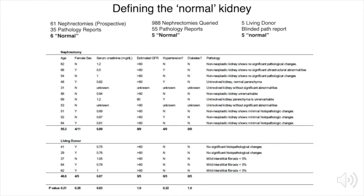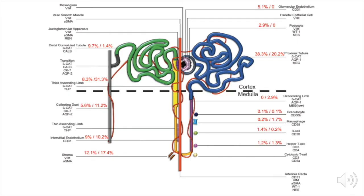In order to define the cellular proportions and spatial organization in a representative dataset of human kidneys, we obtained tissue from 16 kidneys from 3 independent sources: tumor-remote surgical nephrectomy obtained both prospectively and retrospectively, as well as living donor tissue. All of this tissue was graded as histopathologically normal by renal pathologists. We were able to quantify the proportions of cells comprising the normal human cortex and medulla, with proximal tubule making up nearly 40% of the cells in the human cortex and 20% in more superficial regions of the medulla.